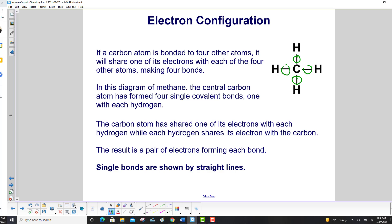In this diagram of methane, the central carbon atom has formed four single covalent bonds, one with each hydrogen. The carbon atom has shared one of its electrons with each hydrogen, while each hydrogen shares its electron with the carbon. The result is a pair of electrons forming each bond. Single bonds are shown by straight lines.